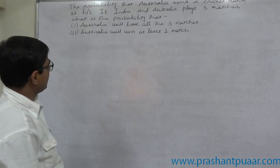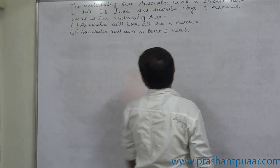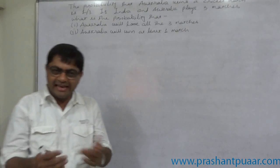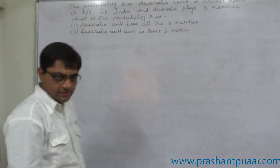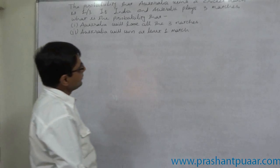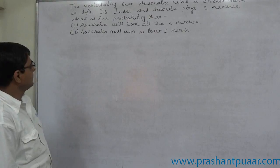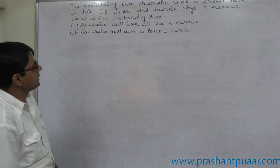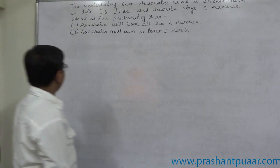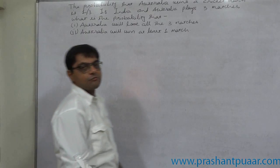A new case: the probability that Australia wins a cricket match is 1 by 3. If India and Australia play 3 matches, what is the probability that number 1 — Australia will lose all 3 matches, and number 2 — Australia will win at least 1 match?